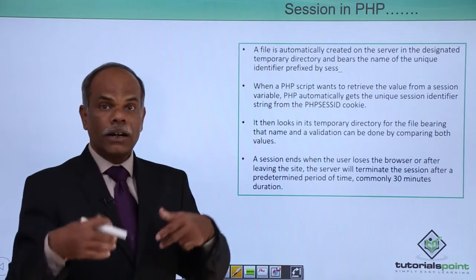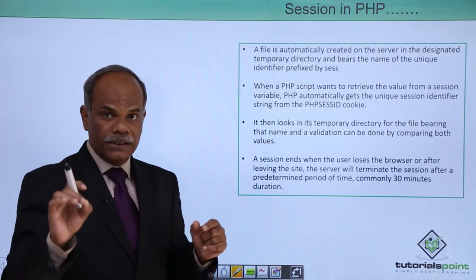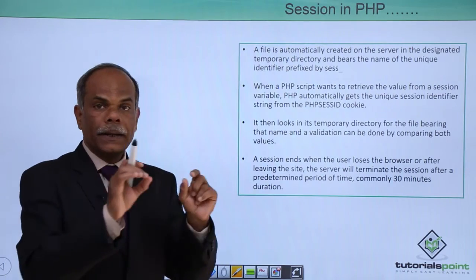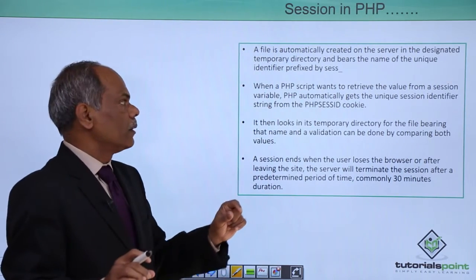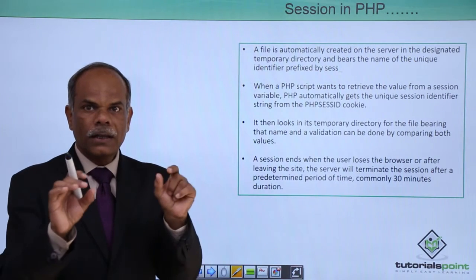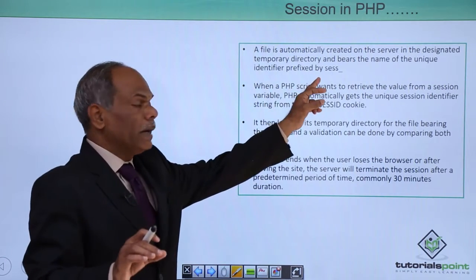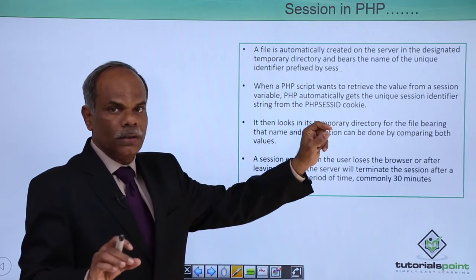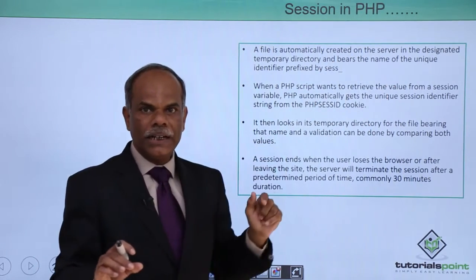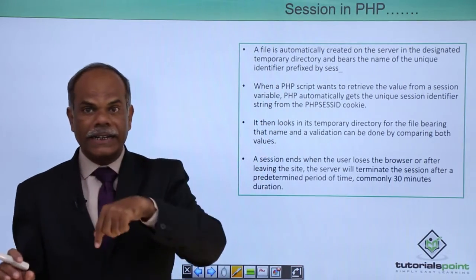On the server, a file is automatically created in the designated directory set in php.ini. It bears a name containing that unique 32-hexadecimal-digit identifier, prefixed by sess_. So the file is named sess_ followed by the generated PHP session ID.